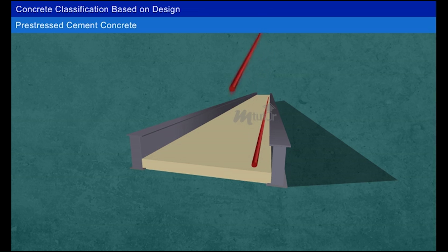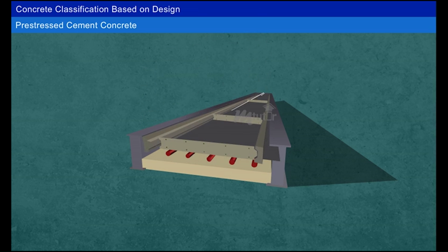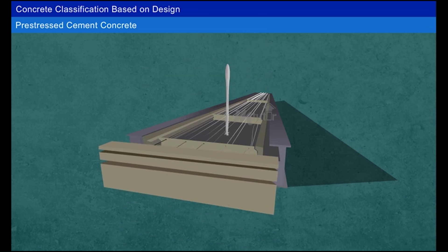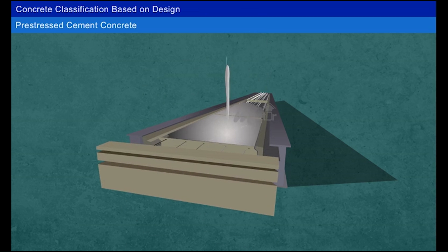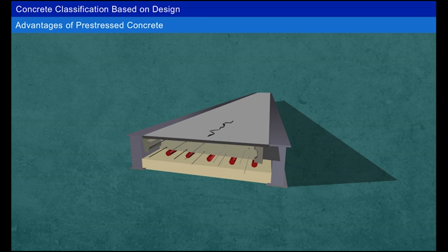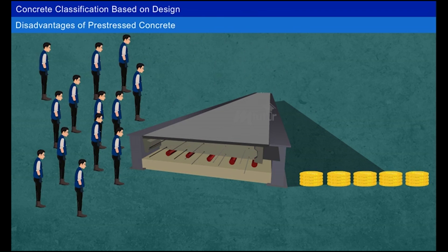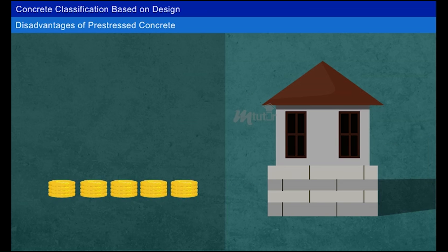Pre-stressed concrete is cement concrete in which high compressive stresses are artificially induced before its actual use. These stresses are induced by pre-tensioning the reinforcement before placing the concrete, then the reinforcement is released when the concrete reaches its final setting. High tensile reinforcement is used, which helps reduce the development of cracks. Durability is high and it is resistant to fire. Disadvantages include extra labor cost due to stressing of the tendons, and high cost for small buildings.